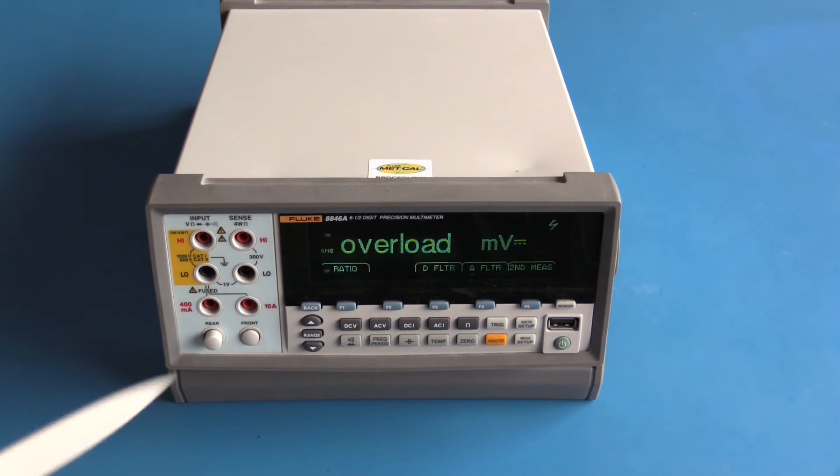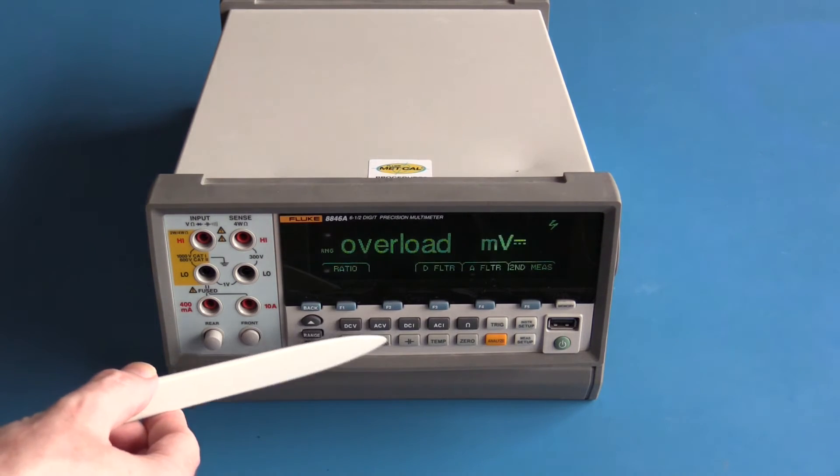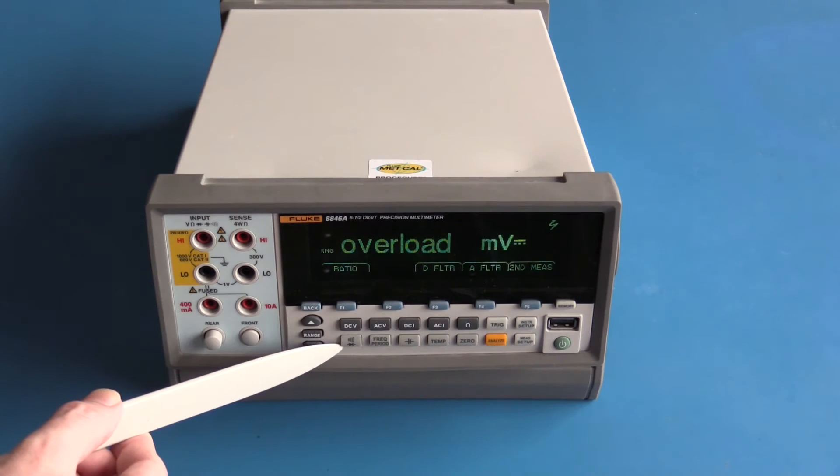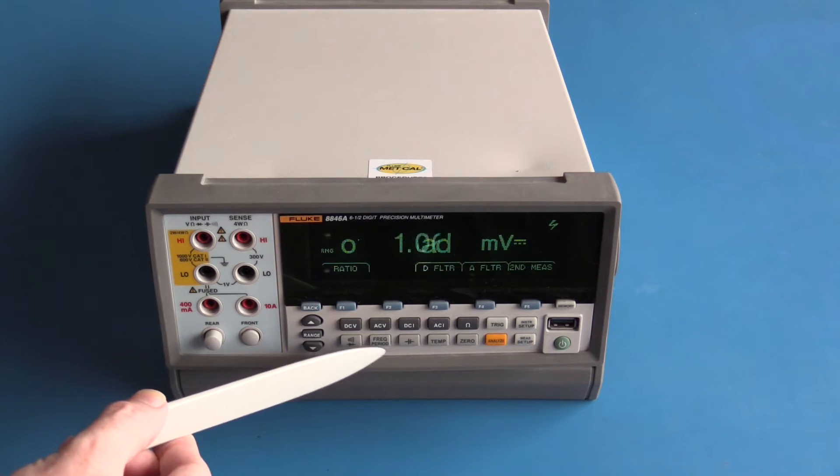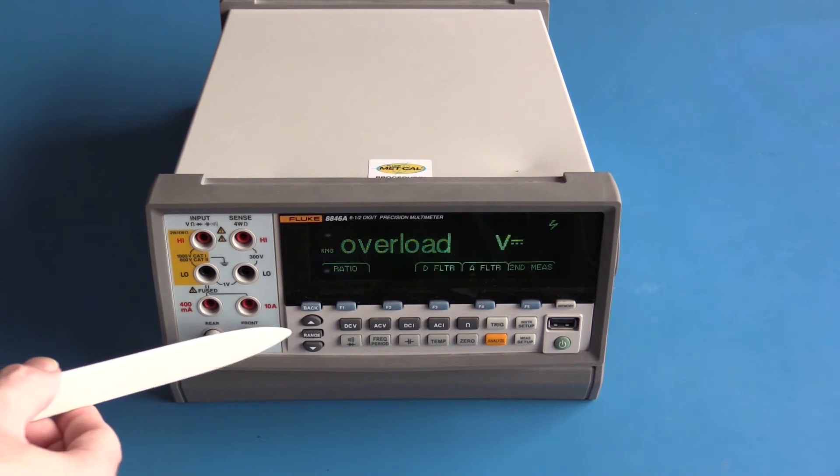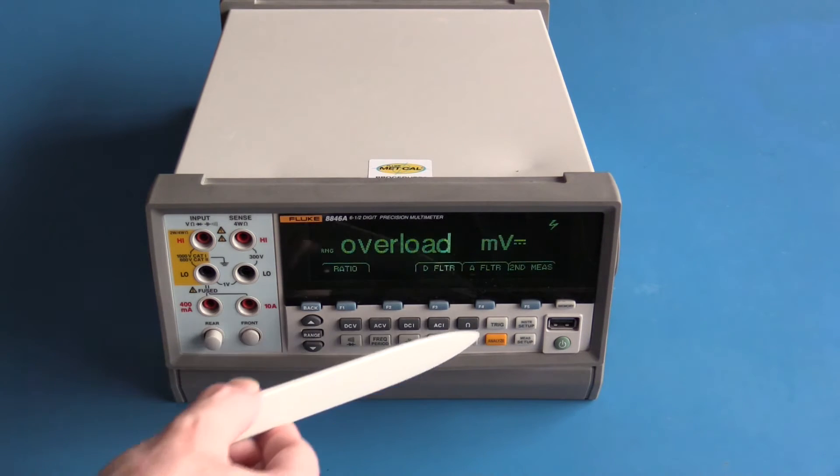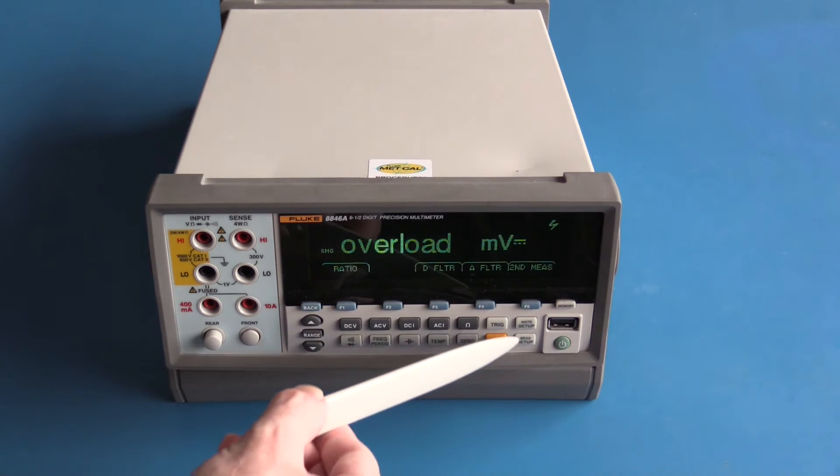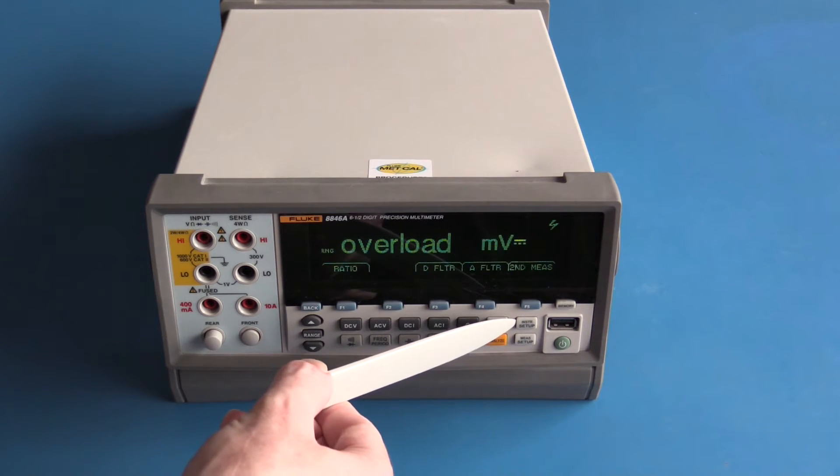This meter has a VFD, it is dot matrix and we have a number of soft buttons underneath the display. Functions on this meter include DC volts, AC volts, DC current, AC current, ohms, continuity and diode, frequency, capacitance, temperature. This meter is auto ranging but you can override that. There is also a trigger function, analyze which we won't really get into today, your measurement setup and the instrument setup.